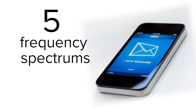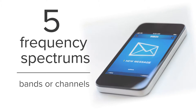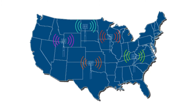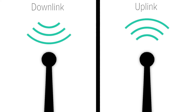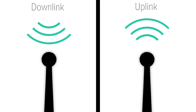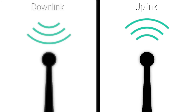Cellular signal is divided up into five frequency spectrums. Each of these spectrums is then divided into bands or channels. Each cell carrier owns and uses different bands and channels throughout the country. Cellular communication uses different channels for uplink and downlink within the same frequency. Uplink is the signal going to the tower; downlink is the signal coming from the tower.